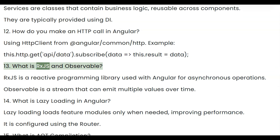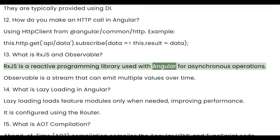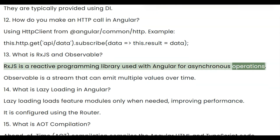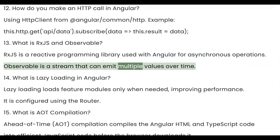Question 13: What is RxJS and Observable? RxJS is a reactive programming library used with Angular for asynchronous operations. An Observable is a stream that can emit multiple values over time.